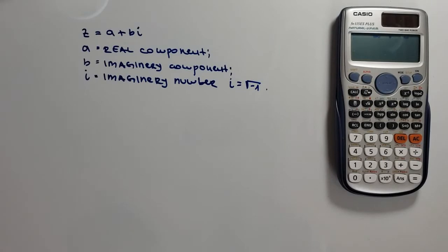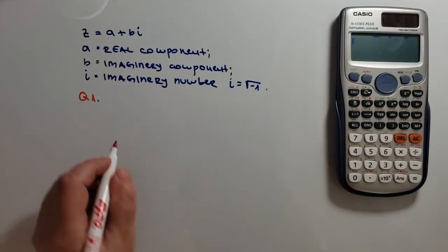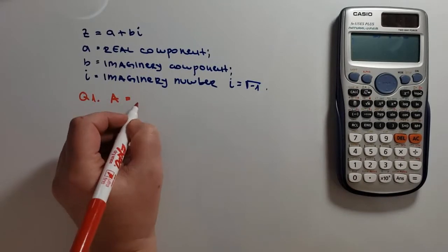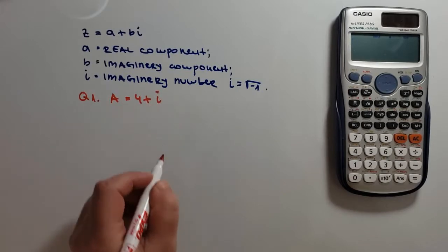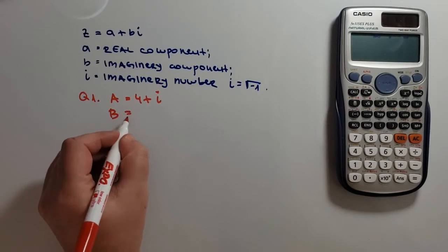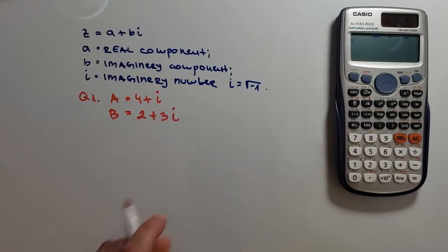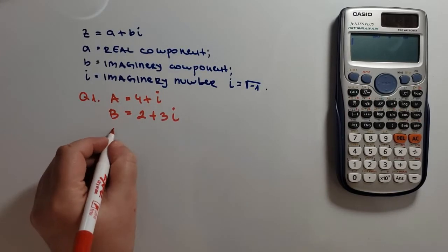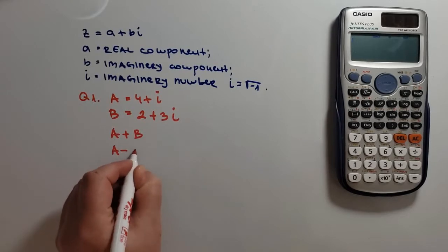Let's start with some simple addition and subtraction problem. We have two vectors, which are defined as a is equal to 4 plus i, and b is equal to 2 plus 3i. Determine the sum and the difference of these two vectors. So we have a plus b, and we have a minus b.